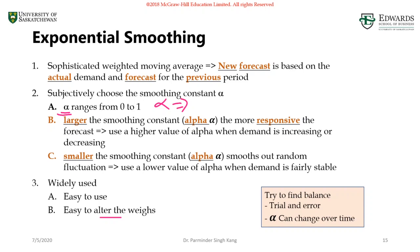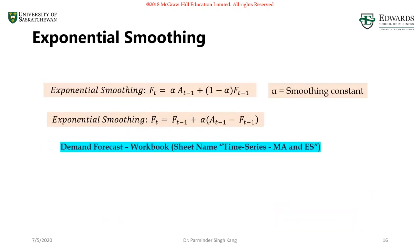Depending on the time series, the value of alpha will vary. For exam purposes, I will give you the value of alpha and you just use it to do the prediction. However, you must know the implications of having a smaller versus larger value of alpha. There are two formulas for exponential smoothing — both produce the same results. Most of my examples use the first formula, but feel free to use whichever you are comfortable with. Before we apply the formula, I want to explore why it is called exponential smoothing.